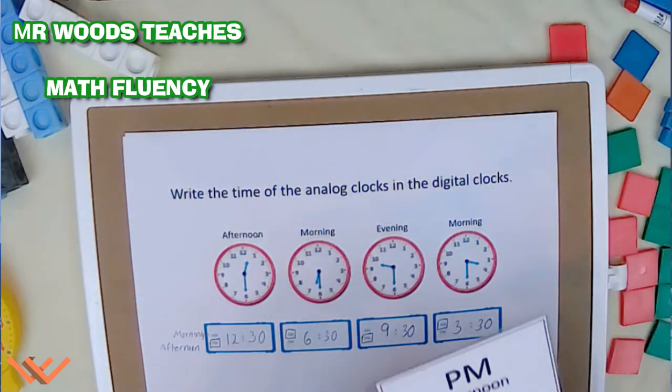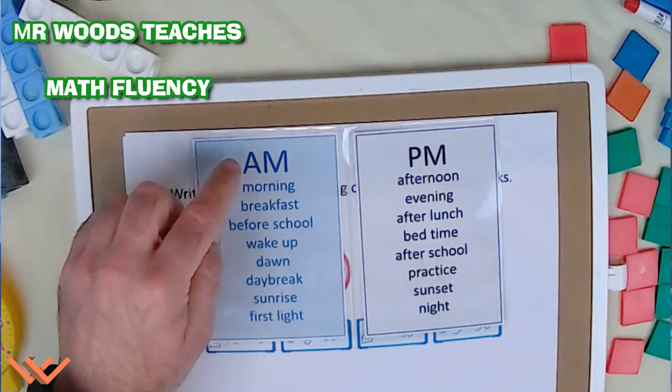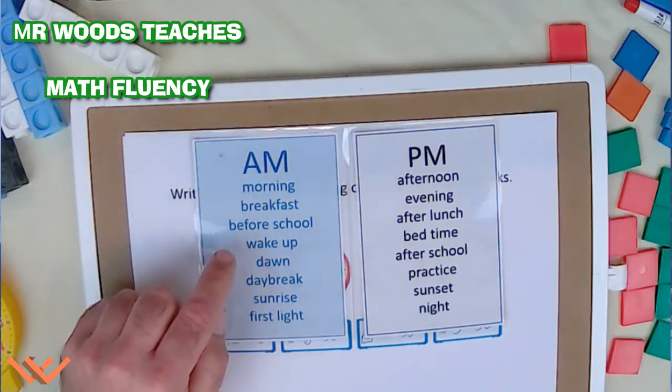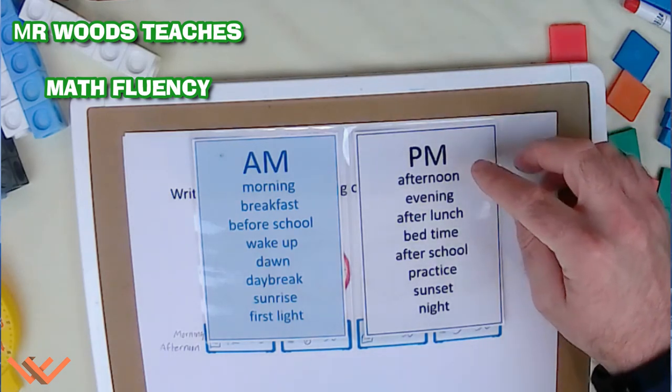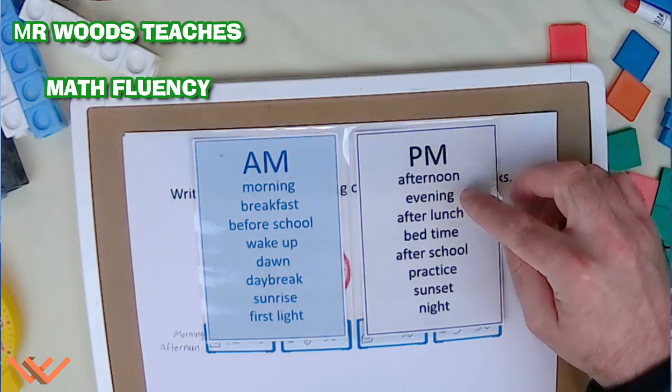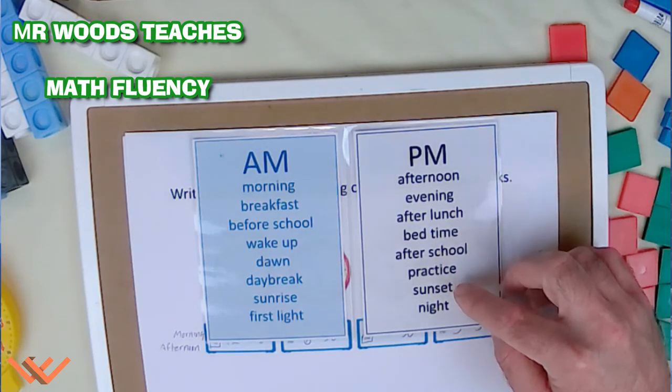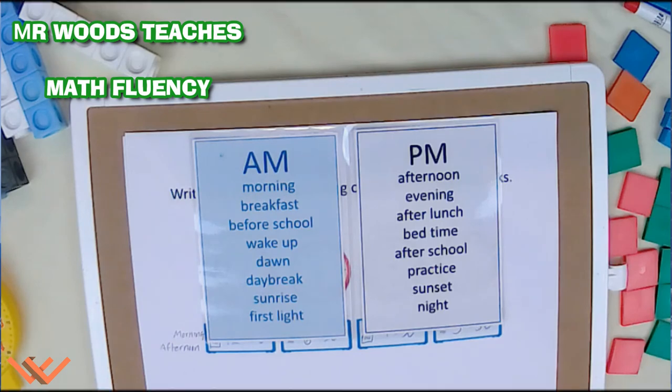See how we're working that? I want to show you a couple of things here. There's other words that we have for AM and PM. So there's AM, morning, breakfast, before school, wake up, dawn, daybreak, sunrise, first light. Those all have shades of meaning of morning. PM, afternoon, evening, after lunch, bedtime, after school, practice, sunset, night. Again, those have shades of meaning for afternoon or evening, which is PM.